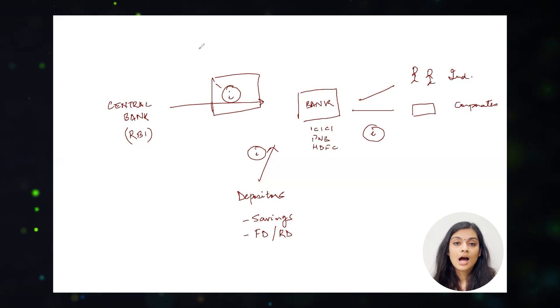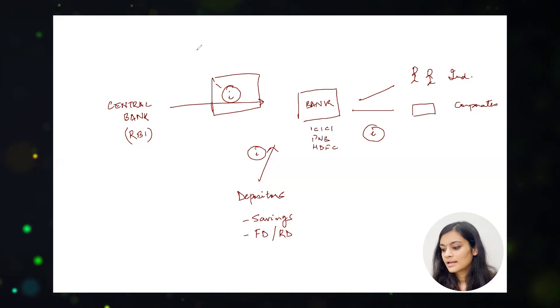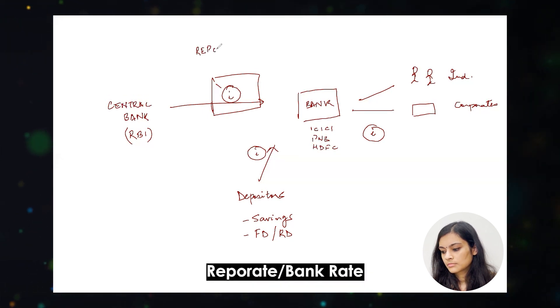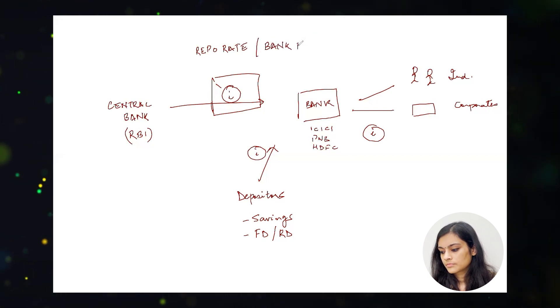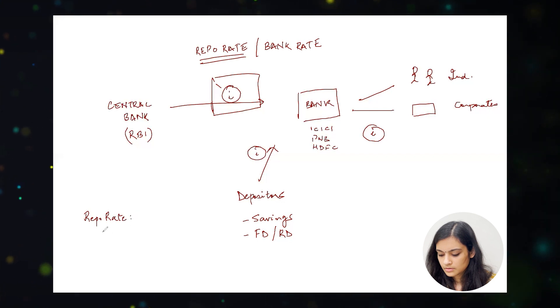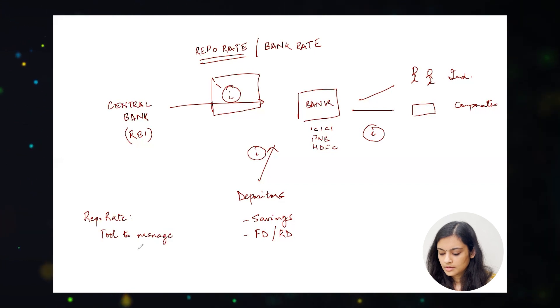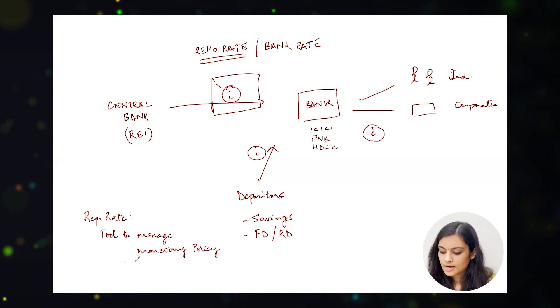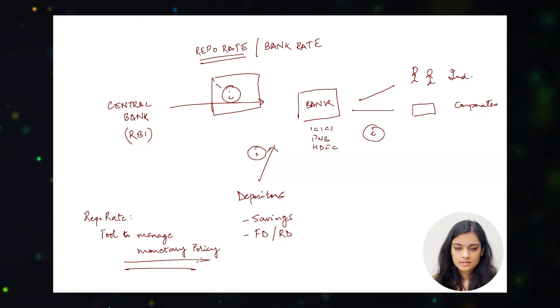But the most important interest rate here is the one the RBI charges in order to lend out money to commercial banks — this is called the repo rate. It is also called the bank rate. This is the fundamental tool through which central banks or governments control the monetary policy of any economy. So repo rate is the primary tool to control or manage monetary policy, which is any policy influenced by the central bank or the government of the country.